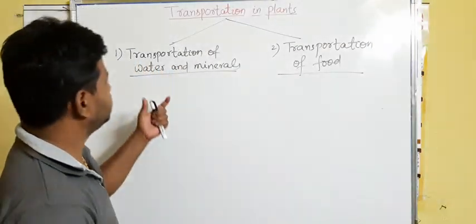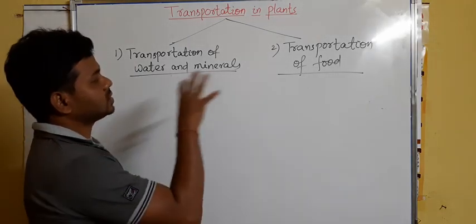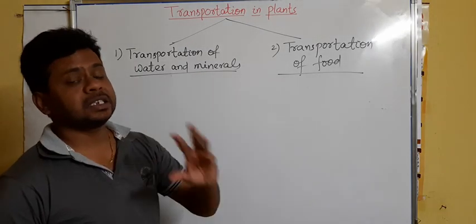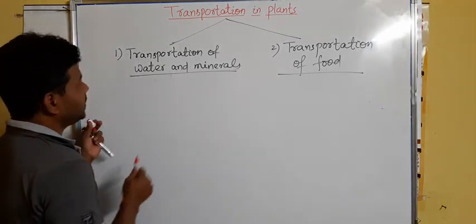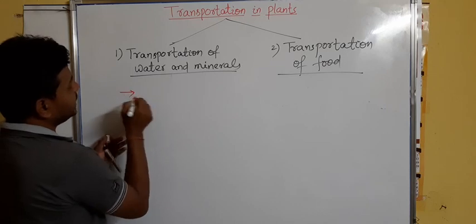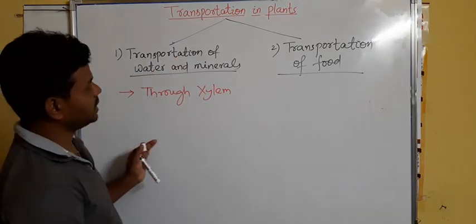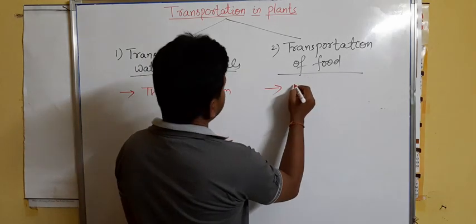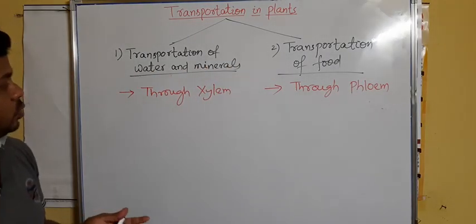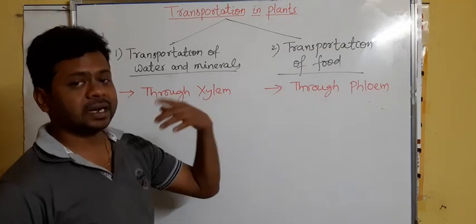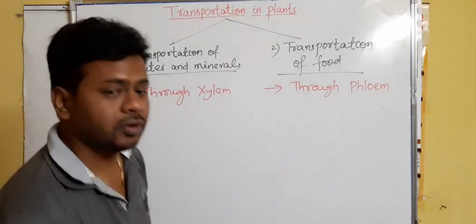For transportation of food and water, in case of a plant there is a special tissue for conduction, called vascular tissue, which is of two types: one is xylem and another is phloem. Transportation of water and minerals takes place through xylem, whereas transportation of food takes place through the phloem tissue.